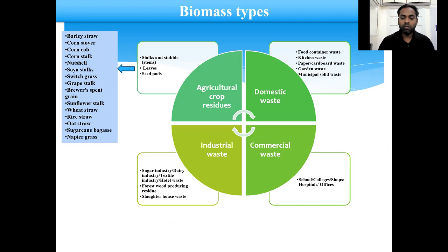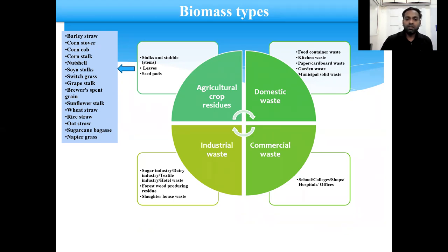Another important type of biomass is industrial waste, which mainly consists of sugar industry waste, dairy industry waste, textile industry waste, hotel industry waste, forest wood processing residues, and slaughterhouse waste. These are the main industrial waste types.